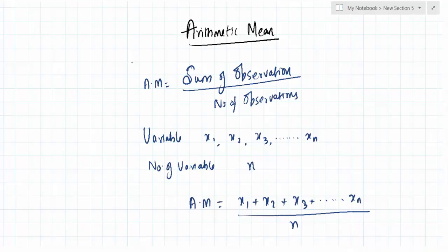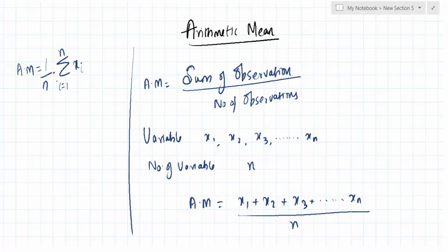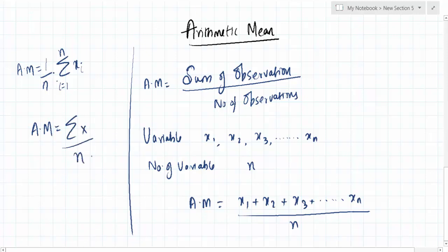If I compress this as a formula, the arithmetic mean is the summation — using the summation symbol — of i equals 1 to n of xi, multiplied by 1/n. So it is 1/n times the summation from i equals 1 to n of xi. Simplifying, arithmetic mean equals the summation of x divided by n, where the summation of x denotes the sum of each and every item or variable, divided by the number of those variables.